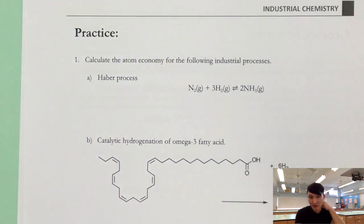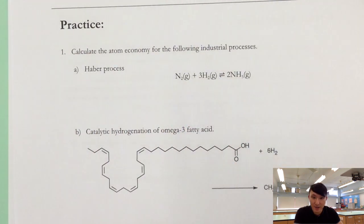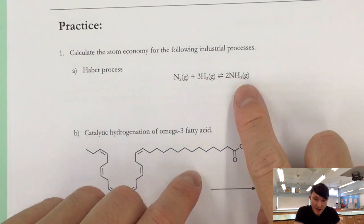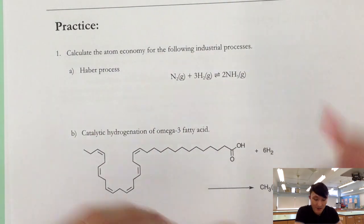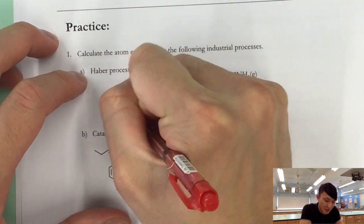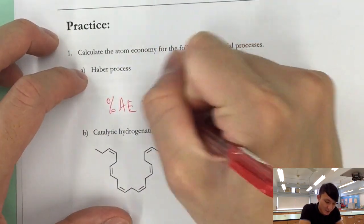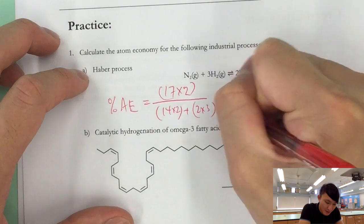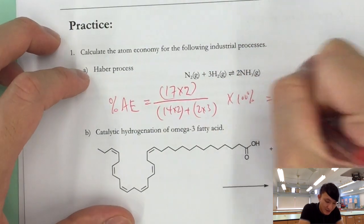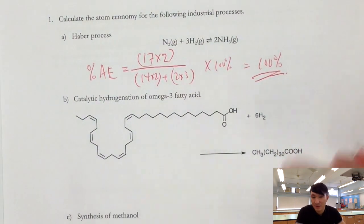Now at the back we have a practice question focusing on atom economy. I can do one for you here, Haber process. Now if you are smart, you realize that it is 100%, because you only got one product. When you got one product, that means all the atoms from the reactants must end up at the product. But still, we try to calculate it. Percentage atom economy equals to 17 times 2 over 14 times 2 plus 2 times 3 times 100%, which is equal to 100%. Now, so pause the video. Attempt the question yourself.